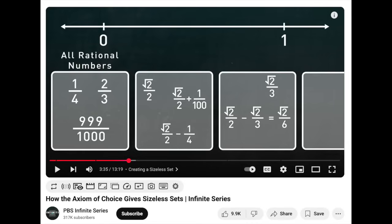To start, she breaks up the line segment between 0 and 1 into an infinite number of disjoint sets that collectively contain all the numbers between 0 and 1. These are called equivalence classes, and each one is the set of all numbers that differ from each other by any rational number. She explains this very well in the video, and I am assuming that you have watched that.